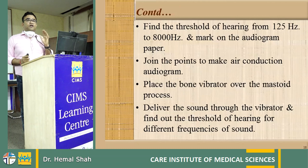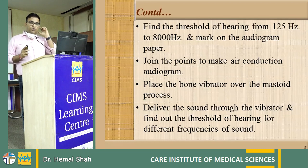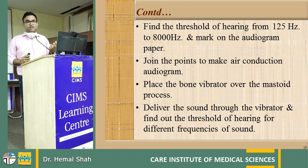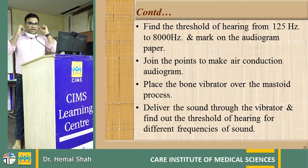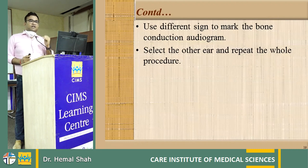Find the threshold of hearing from 125 Hz to 8 kHz — that is the range where the human ear hears properly. Mark it on the audiogram and join the points to make the air conduction audiogram. For bone conduction, place the bone vibrator on the mastoid of each ear — right mastoid for right ear, left mastoid for left ear — deliver sound through the vibrator, and find the threshold for different frequencies. Air conduction is tested with insert earphones; bone conduction is tested with the vibrator. Different signs mark each on the audiogram.